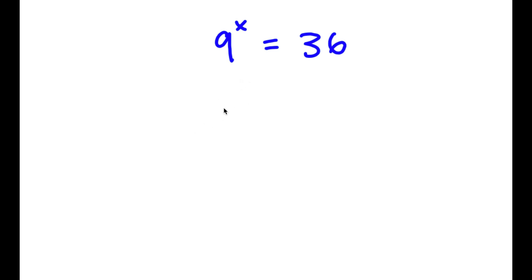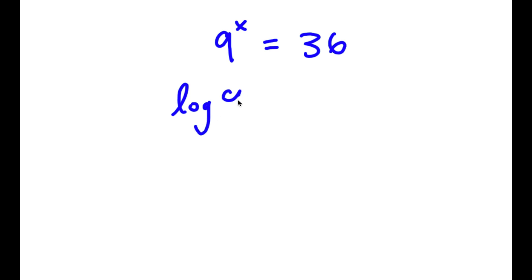In this problem, I have 9 to the power of x is equal to 36. So what I'm first going to do is take the log on both sides. So I have log 9 to the power of x is equal to log 36.